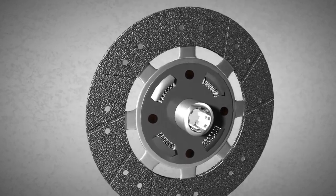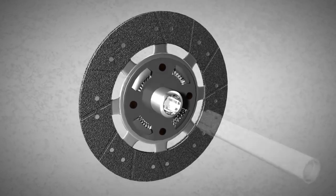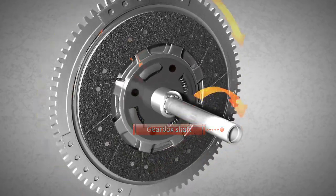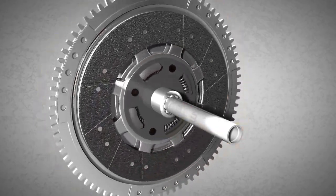The clutch disc is connected to the gearbox through the gearbox shaft. Consequently, the wheels of the vehicle only rotate when the flywheel is in contact with the clutch disc.